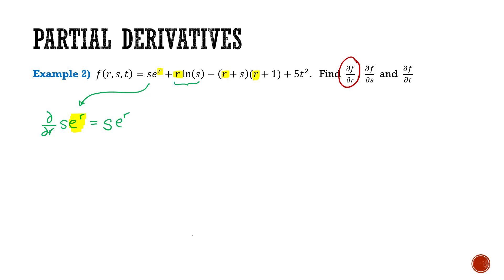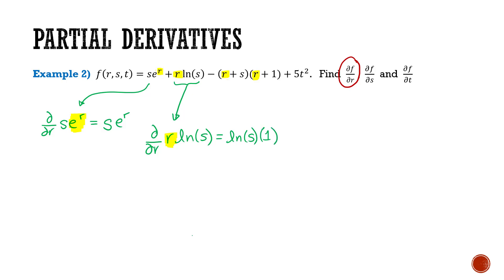Now let's do the derivative of r·ln(s) with respect to r. My r variable here is changing. ln(s) will be treated like a constant, so this derivative becomes ln(s), which is a coefficient to r, times the derivative of r, which is simply 1.